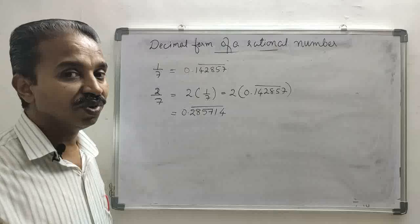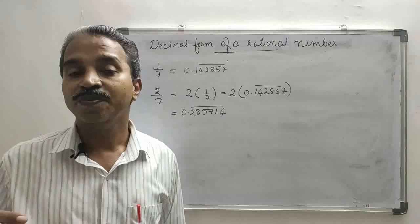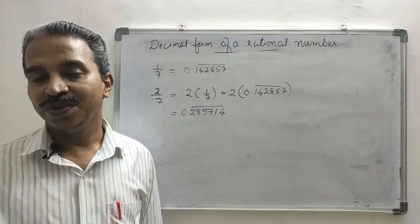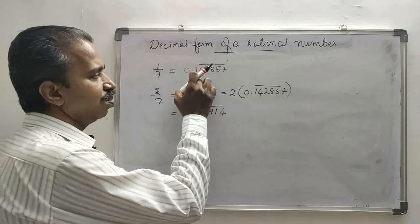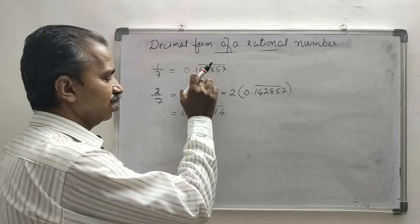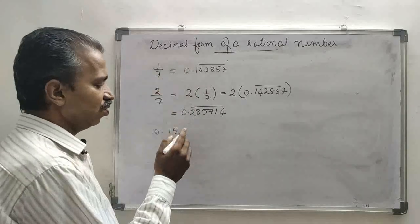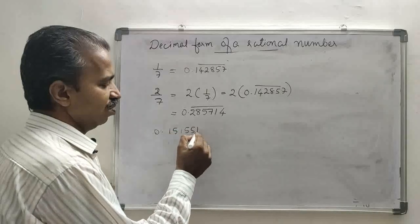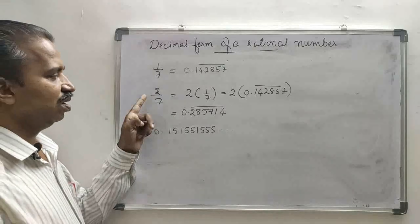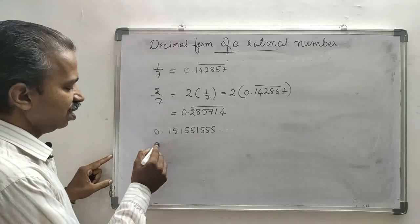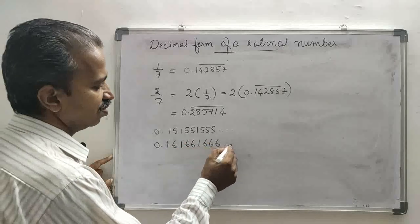To find 5 irrational numbers between these two numbers, you have to write 5 non-terminating and non-recurring decimals between 0.142857... and 0.285714... The first digit after the decimal point is 1 here and 2 there. So if you take 0.1511555..., or 0.161166..., or 0.171177... — these are all non-terminating, non-recurring and lie between 1 upon 7 and 2 upon 7.